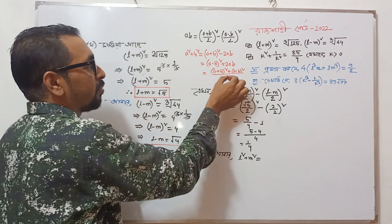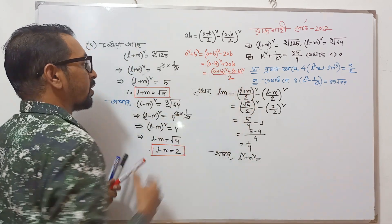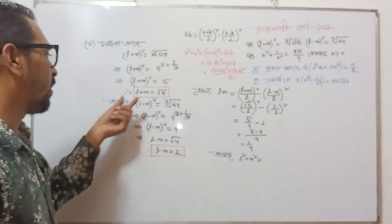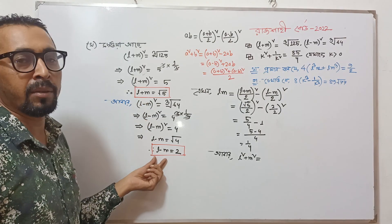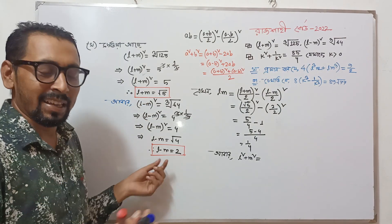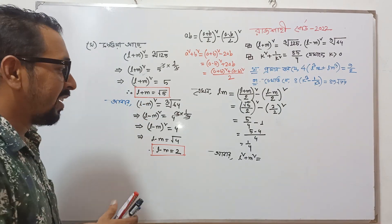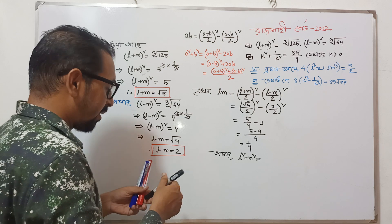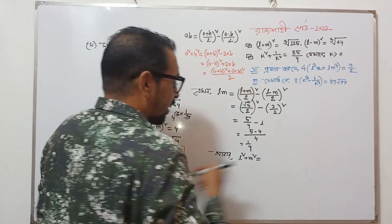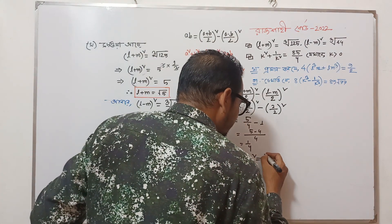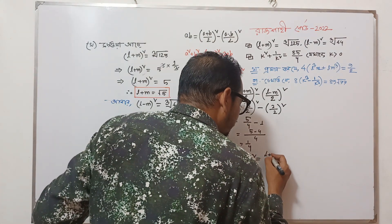This is very easy to use. The result is a minus b whole square divided by 2.